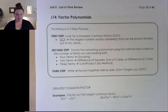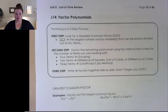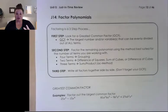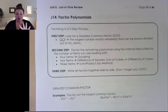We're going to go over J14, which is the beginning of factoring polynomials. We have many different ways we can factor polynomials depending on how many terms they have. If they have two terms, we're looking for sum or difference of cubes. If they have three terms, we're going to use the sum product chart or the AC method. If they have four terms, we're going to use grouping.